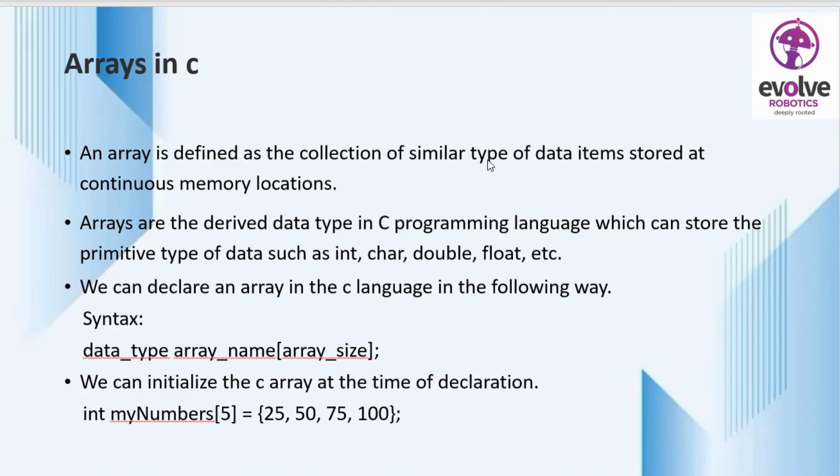So an array is defined as the collection of similar type of data items stored at continuous memory locations. Arrays are derived data types in C programming language which can store primitive types of data such as int, char, double, float, etc.